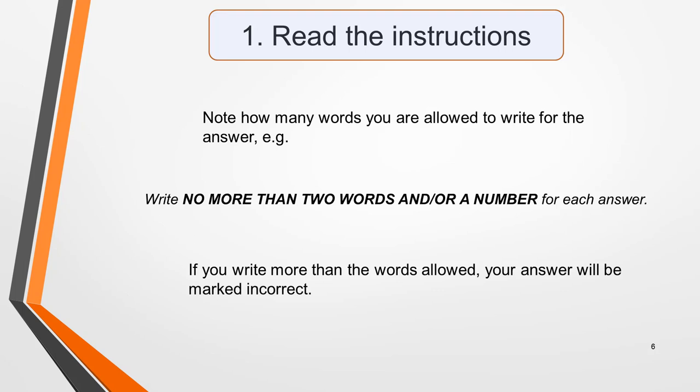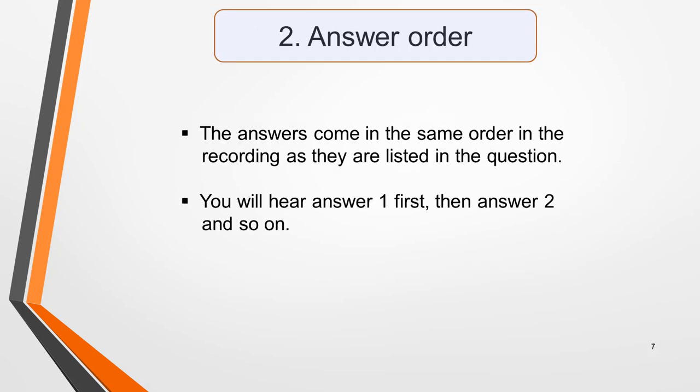If you write more than three words your answer will be marked incorrect, even if the information you give is correct. The instructions do vary and the limit could be two words and/or a number, or only one word, so don't get caught out. The answers will come in the same order in the recording as they're listed in the question. So for this question you'll hear answer one first, then answer two and so on. This makes it easier to pick out the answers than if they were in a random order.